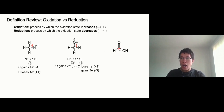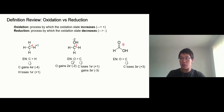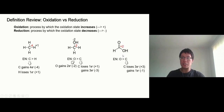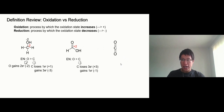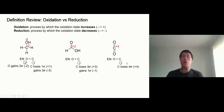One more — we're going to do just the carbon in the middle. This carbon is bonded to two oxygens, but one is a double bond to oxygen. We treat a double bond as two separate single bonds, so this carbon is bonded to three oxygens total and one hydrogen. Oxygen beats carbon, so carbon loses three electrons from the three oxygen bonds and gains one from the hydrogen — giving this carbon an oxidation state of plus two. For the last example, carbon bonded to four oxygens loses four electrons, so it becomes plus four.